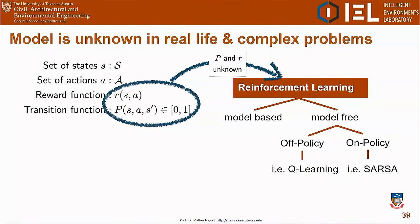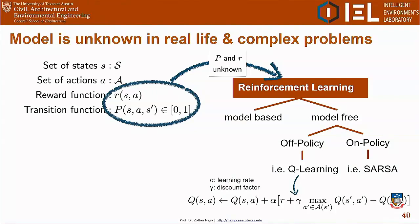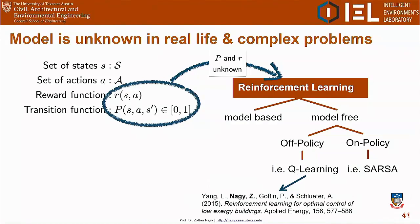Q-learning is among the most popular RL algorithms. The Q-value Q(s, a) represents the cumulative sum of discounted rewards when taking action a in state s and then following the optimal policy thereafter. By finding Q-values for all state-action pairs, the agent can follow the path of maximum Q-values to implement the optimal policy.